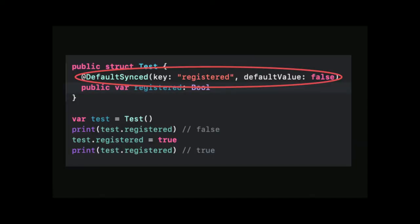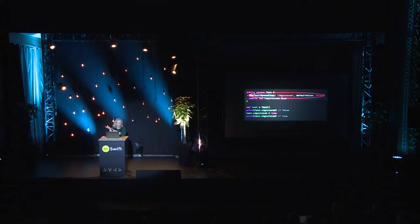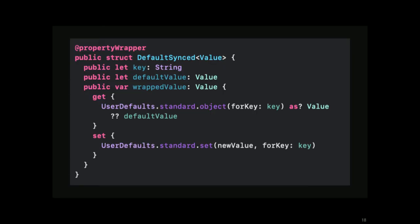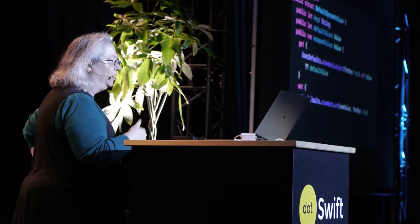Here's one of my favorite things from the proposal — a property wrapper that syncs with user defaults. Anytime you assign something to a property, it automatically syncs it with user defaults. Obviously, you could create a property wrapper that works with Core Data, Google Firebase, or whatever. And here is the complete 100% implementation for user default sync. Look how sweet that is — so cute, adorable, and short. You just create this and use the name of the structure, or you could use an enum or a class. You're not limited to structs.